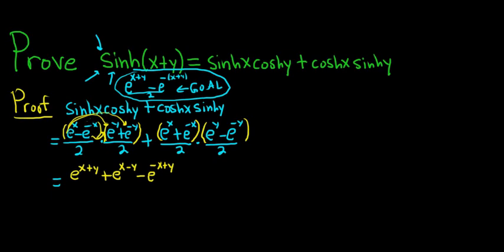And then last but not least, we do the last terms. So that again would be minus e^(-x-y), right? We're adding minus x plus minus y. That gives us minus x minus y. And all of this is being divided by the number 4, right? Because 2 times 2 is 4.